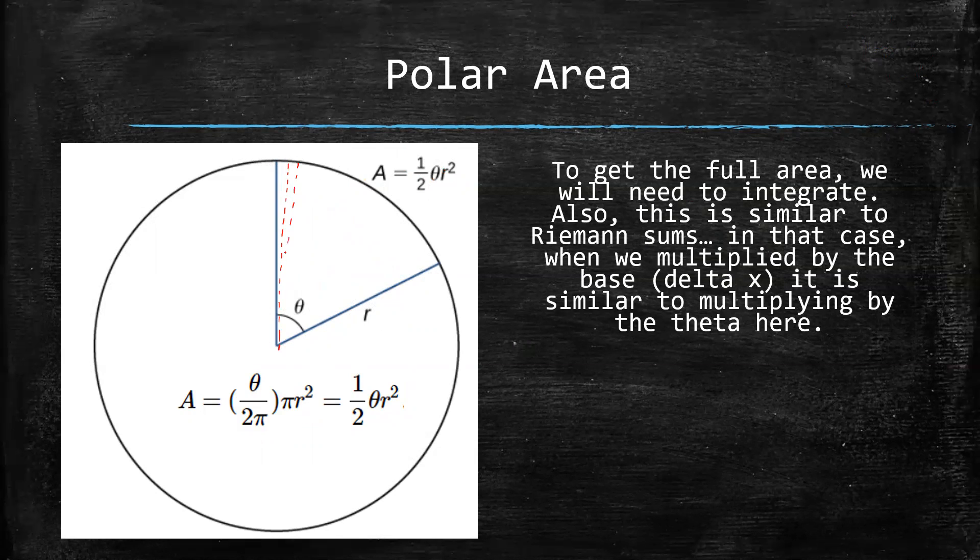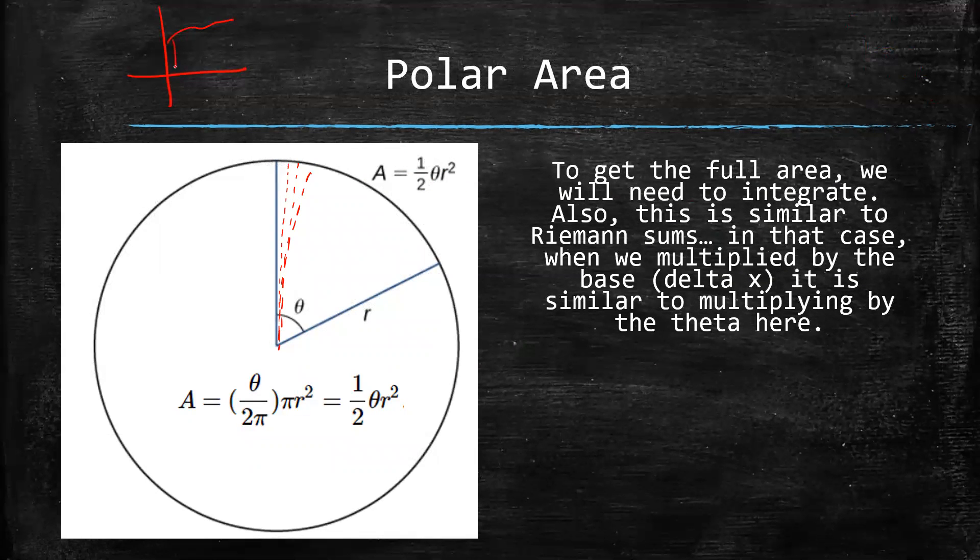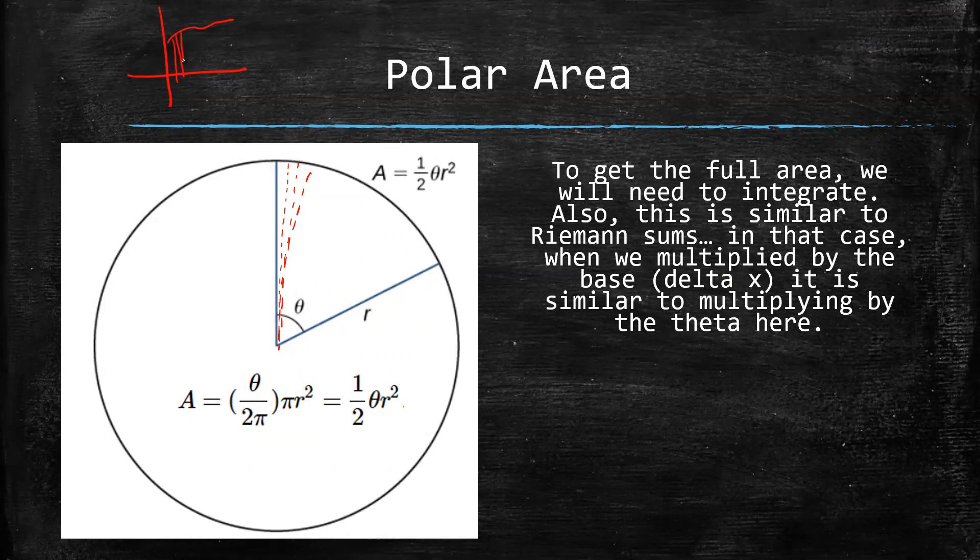What we used to do is we used to break this up into tiny, tiny, tiny little pieces. And so if you remember Riemann sums, they did the same thing, but you did it like vertically. So you would break up the tiny, tiny, tiny little pieces. What was the height of the piece? The height was f of x, and the width was dx. So you would multiply the height times the width, and then you'd add them all up by integrating.